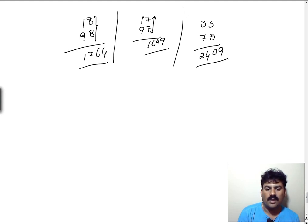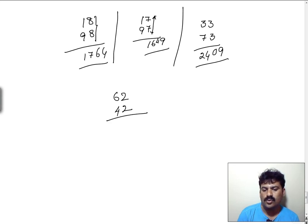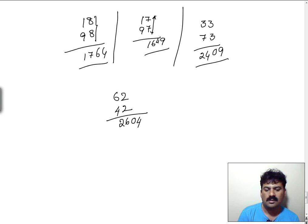We can go for 62 and 42. 2 into 2 is 04. And 6 into 4 plus 2 — 24 plus 2 equals 26. Total: 2604 is the answer.